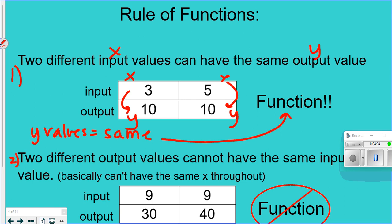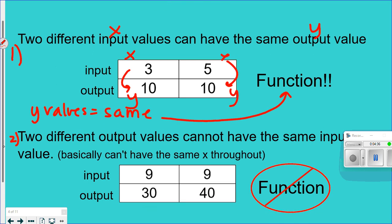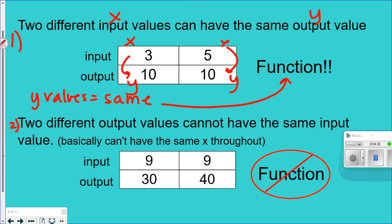Rule two: if you have two different output values but the input values are the same — meaning the y values are different but the x values are the same — this is NOT a function. You cannot have the same x value appearing with different y values.